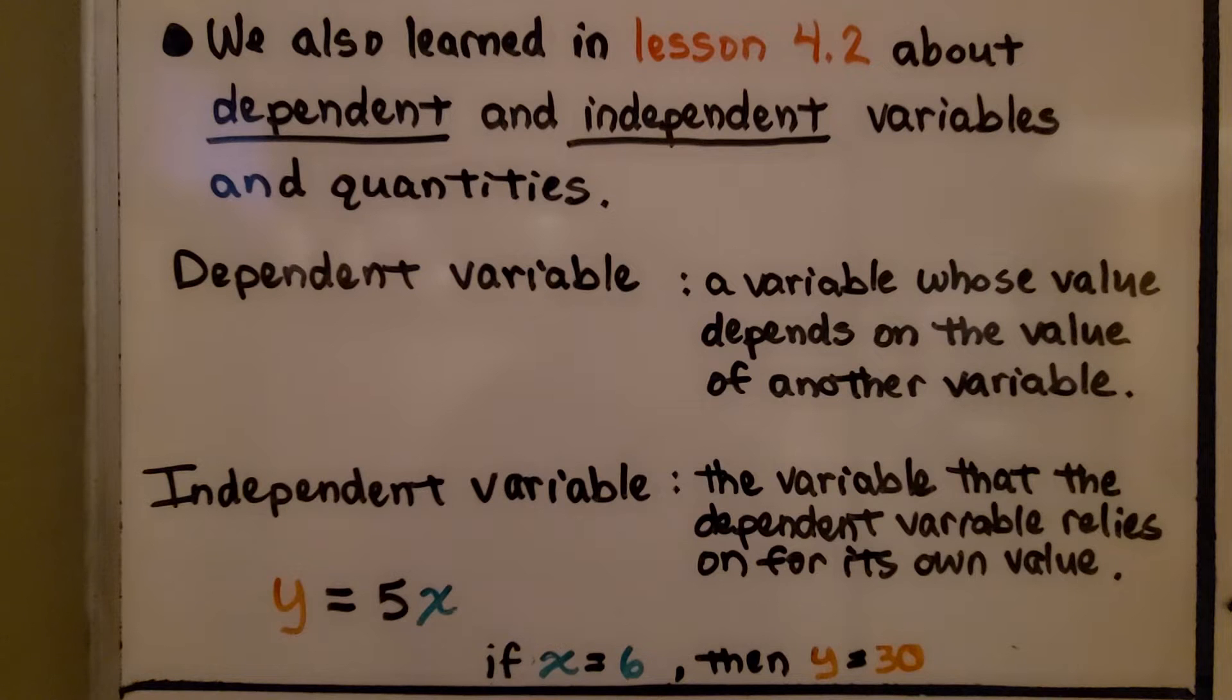Was that confusing? Take a look at this example. We have y is equal to 5x. The value of y is the dependent variable in this scenario because its value depends on the value of x. If x is equal to 6, then y is equal to 30. If x is the independent variable in this scenario, y is the dependent variable.